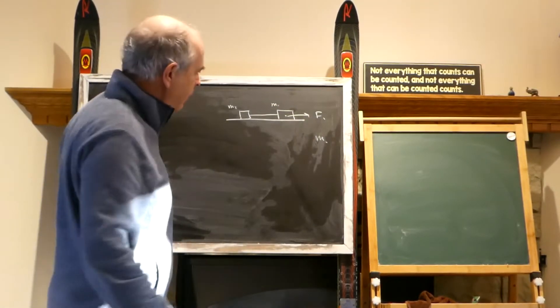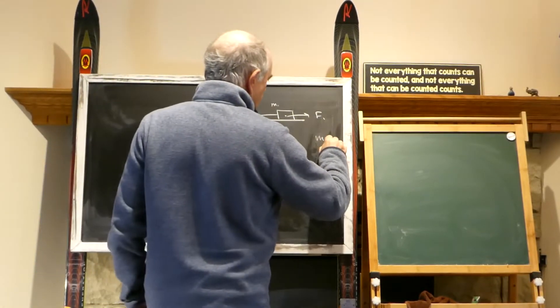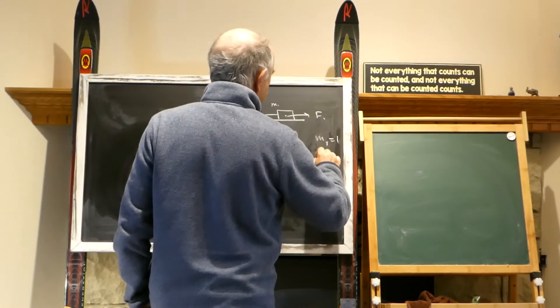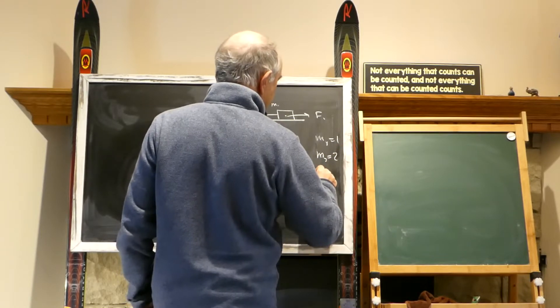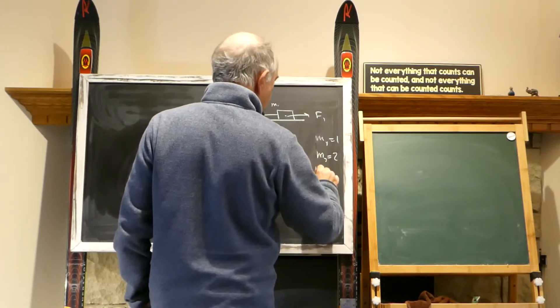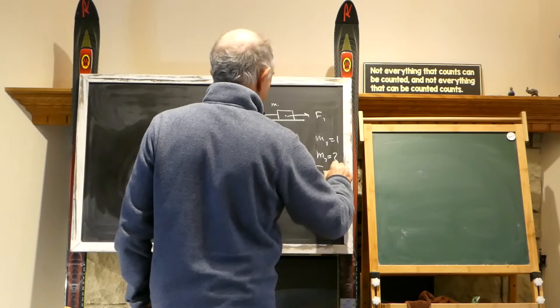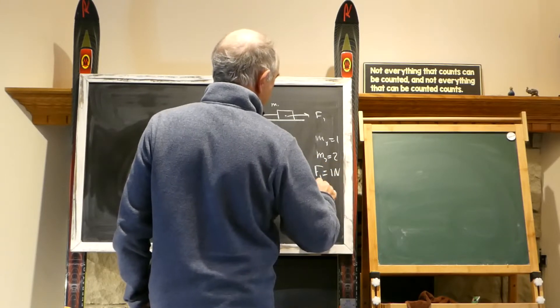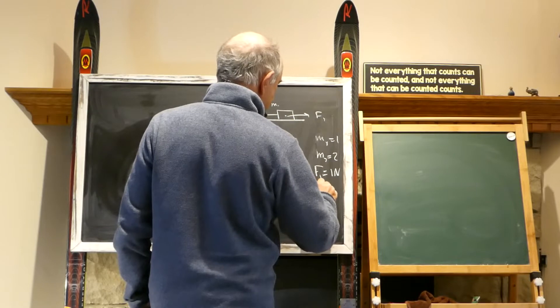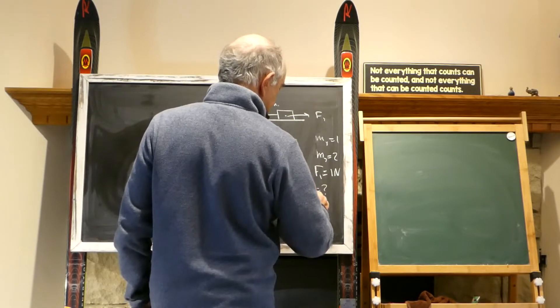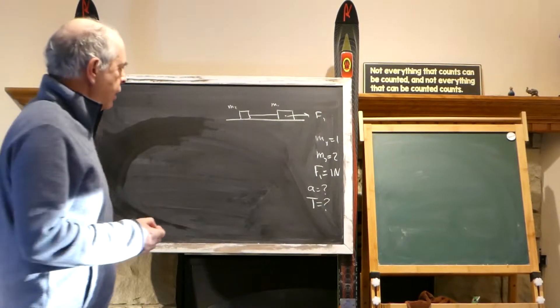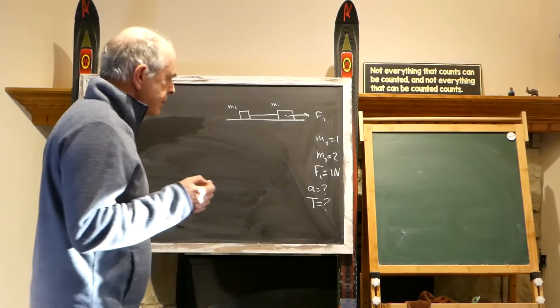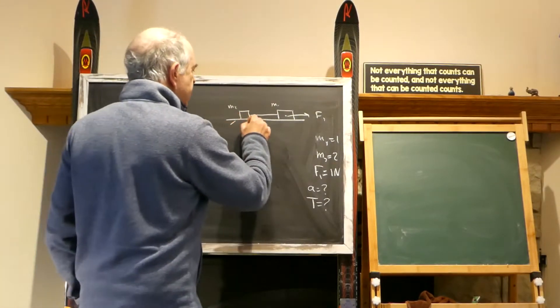M1 is one kilogram, M2 is two kilograms, and F1 is one Newton. They are asking us about acceleration and about tension. What is tension? Let's start, as always, with the picture.